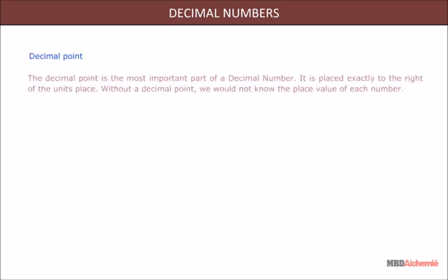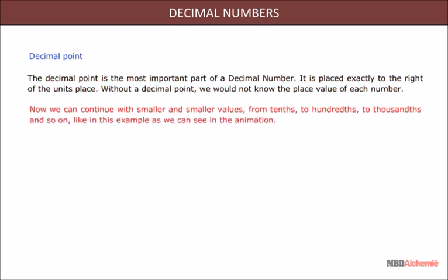Decimal point. The decimal point is the most important part of a decimal number. It is placed exactly to the right of the unit's place. Without a decimal point, we would not know the place value of each number. Now, we can continue with smaller and smaller values from tenths to hundredths to thousandths and so on. Like in this example, as we can see in the animation. In the animation, we have shown the place value of digits in a decimal number.